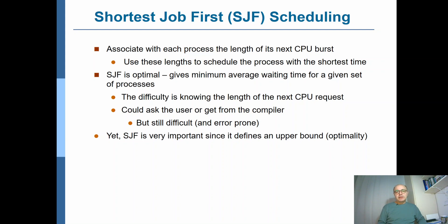An alternative approach for scheduling is Shortest Job First, or SJF scheduling. In SJF scheduling, we assume that for each process we know the next CPU burst. Therefore, we are able to make our scheduling decision based on the length of that CPU burst. Shortest Job First is an optimal solution — it is the best solution you can find if your primary target is to minimize the average waiting time.